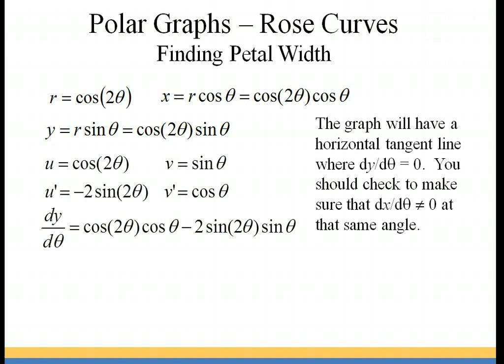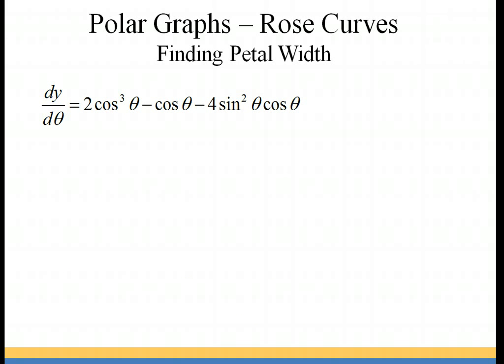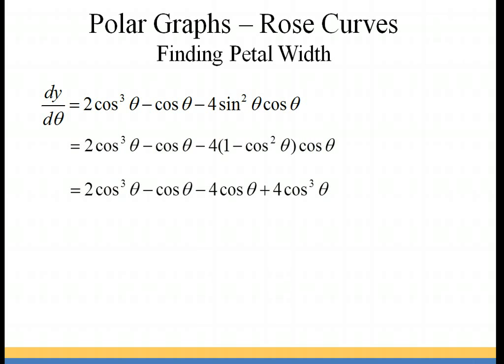We have to set this equal to zero and solve for theta. I need to turn everything into the same angle measure. Using the double angle formulas, I'll rewrite cosine two theta as two cosine squared theta minus one, and sine two theta as two sine theta cosine theta. Distributing and multiplying everything together, and then rewriting sine squared as one minus cosine squared, I distribute the negative four and cosine, and combine like terms to get six cosine cubed theta minus five cosine theta.